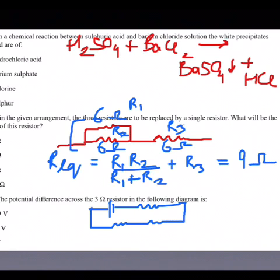So this is the diagram. This voltage is 2 volt, this resistor is 2 ohm, this is 3 ohm, and this is 1 ohm. We have to calculate the potential difference across the 3 ohm resistor.